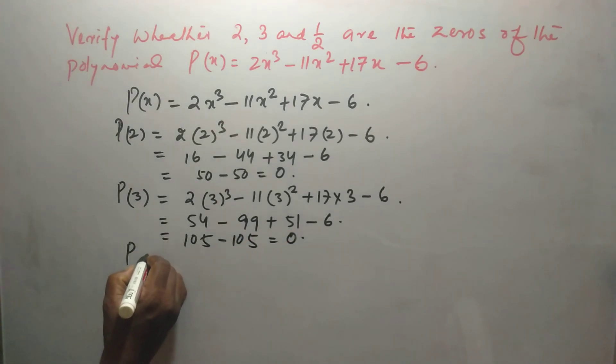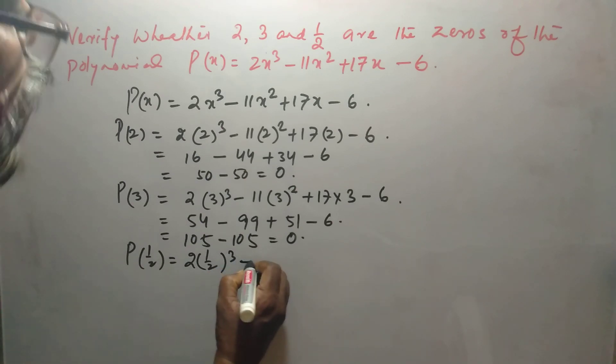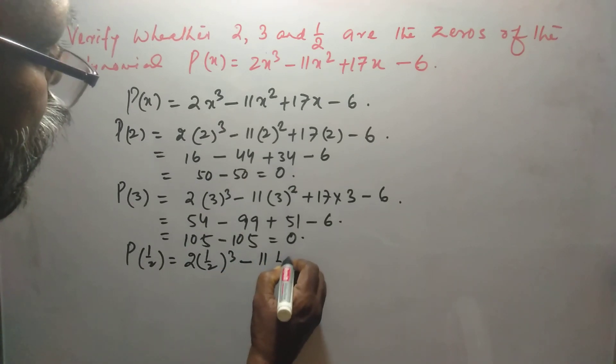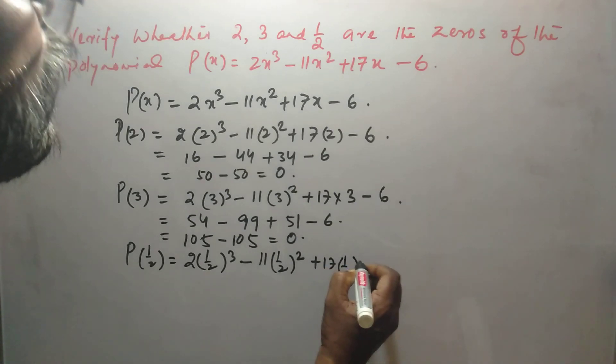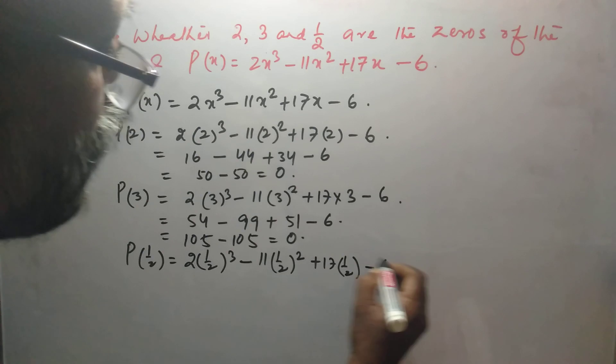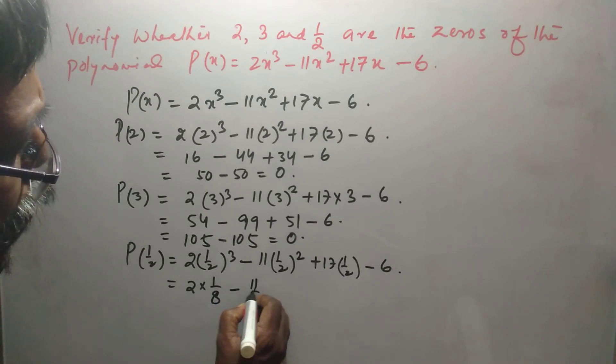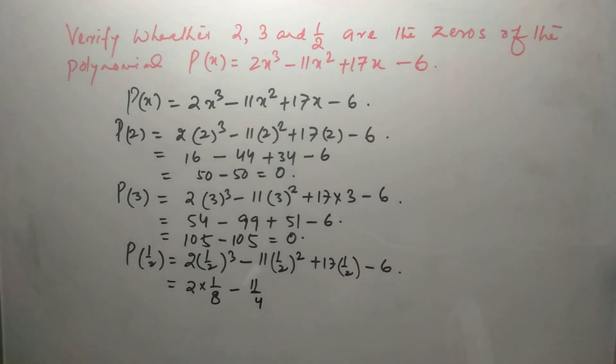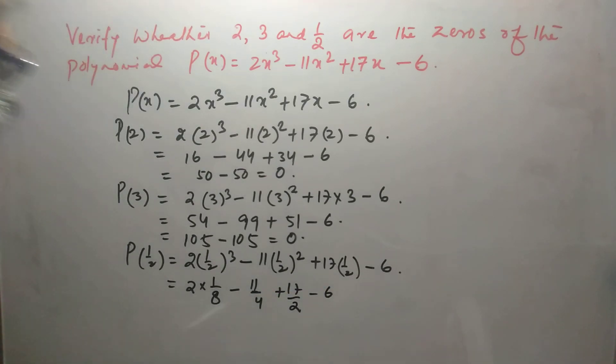P(1/2) = 2(1/2)³ - 11(1/2)² + 17(1/2) - 6. This is 2(1/8) - 11/4 + 17/2 - 6. Cancel, it is 4, now it is 1/4 - 11/4 + 17/2 - 6.